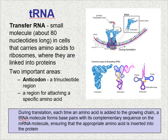The next type is transfer RNA, or tRNA. This is a really small molecule — only about 80 nucleotides long. The purpose of tRNA is to carry amino acids to ribosomes where they will be linked into proteins. During translation, each time an amino acid is added to the growing chain, a tRNA molecule will form base pairs with its complementary sequence on the mRNA molecule. This ensures the appropriate amino acid is inserted into the protein, because a protein's form equals function. If the wrong amino acid were inserted, the protein would not be able to do its job.